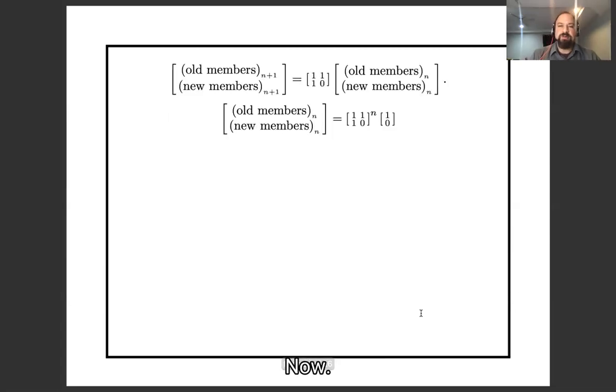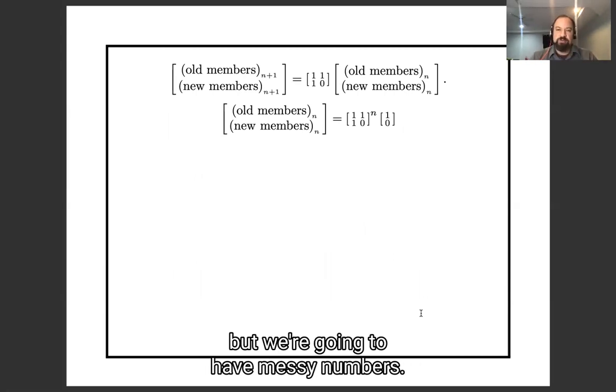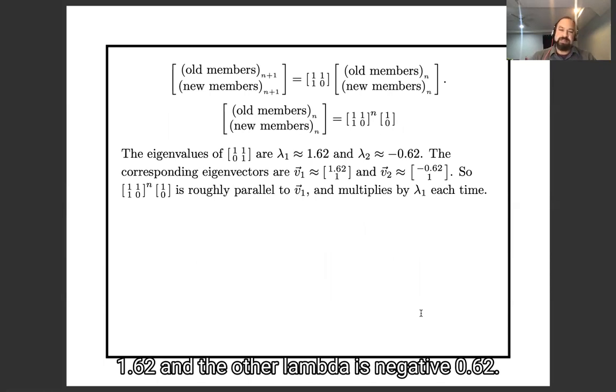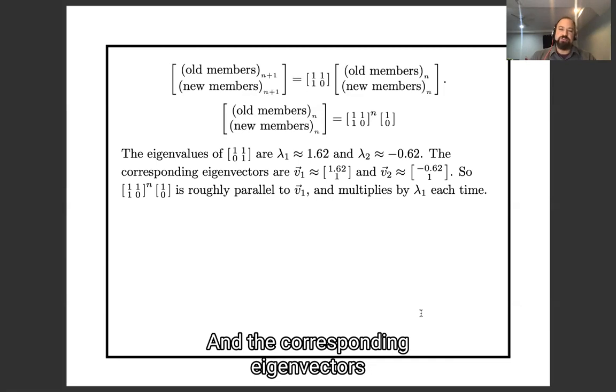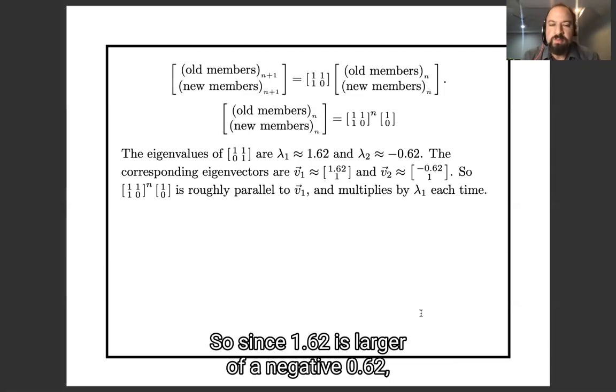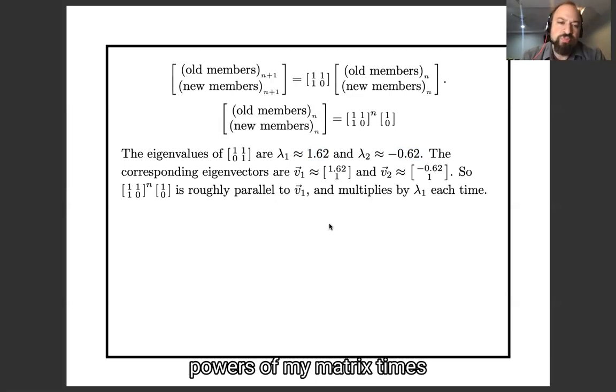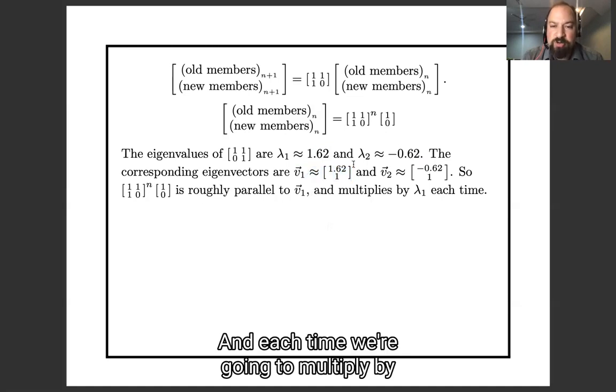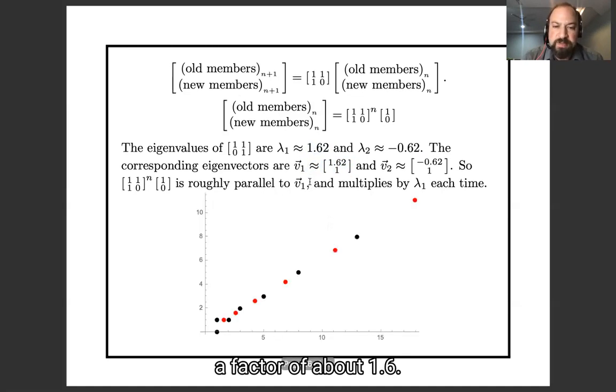Let's go back to our starting example now. This example has a nice story but was going to have messy numbers. The eigenvalues, it turns out, one of them is about 1.62, and the other one is about -0.62. And the corresponding eigenvectors are shown on the screen. So since 1.62 is larger than -0.62, powers of my matrix times a vector are going to be roughly parallel to the eigenvector associated with the larger eigenvalue. And each time we're going to multiply by a factor of about 1.6.